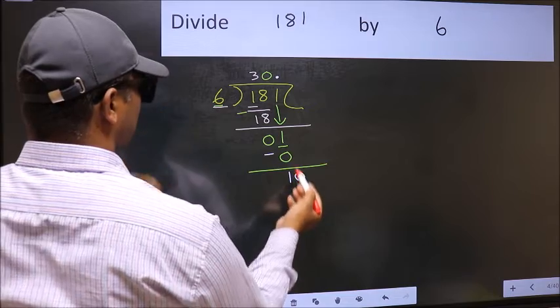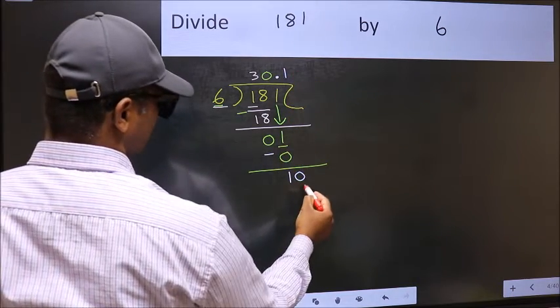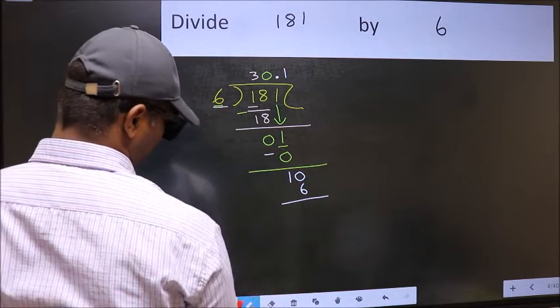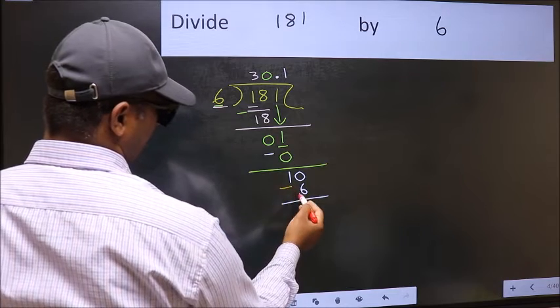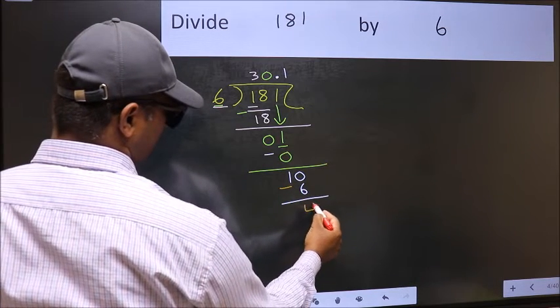A number close to 10 in 6 table is 6, 1, 6. Now you should subtract. 10 minus 6, 4.